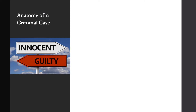Let's talk about the anatomy of a criminal case — what happens, how does a criminal case get started, and where does it go all the way through to the end of a trial? All criminal cases start off with a police investigation. That can be initiated by a witness or by an event that happens, but the police will always be the ones who start the investigation.